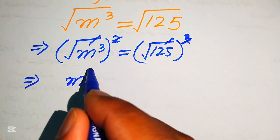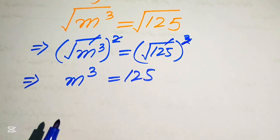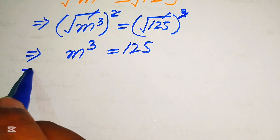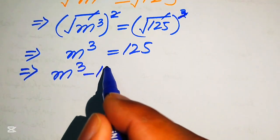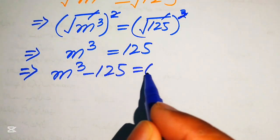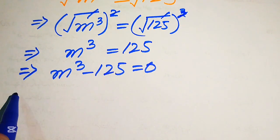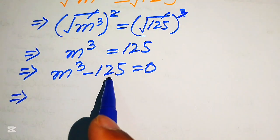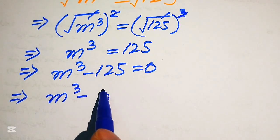We obtain m cubed equals to 125. Now we move 125 to the left hand side and it will be written as m cubed minus 125 equals to 0. Here we will convert this equation into the cubic formula, so we need to write 125 as 5 cubed.